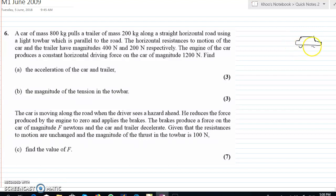The information given, the mass of the car is 800 kg. So let's draw the weight here. So this is 800g N, and it's pulling a trailer of mass 200 kg.